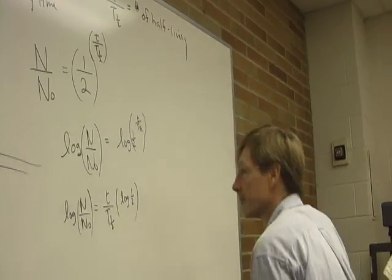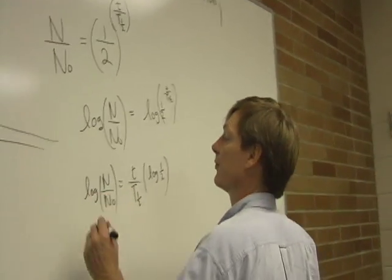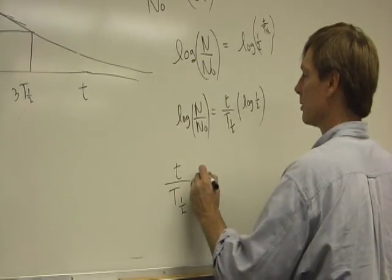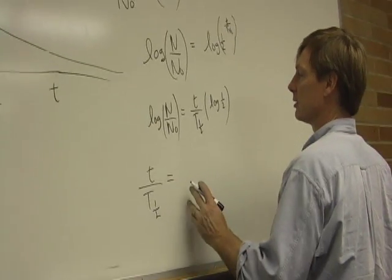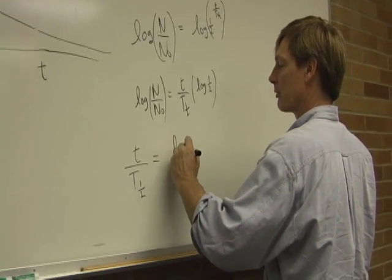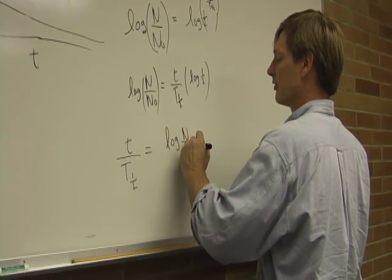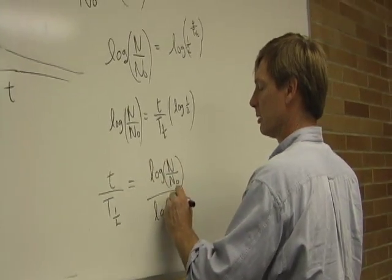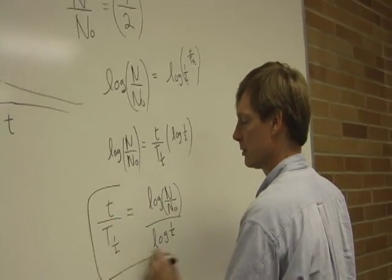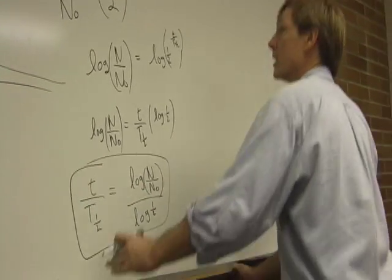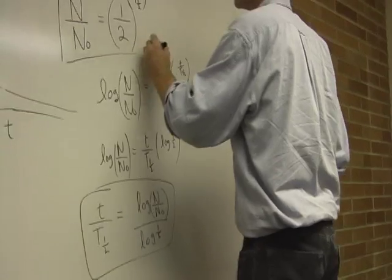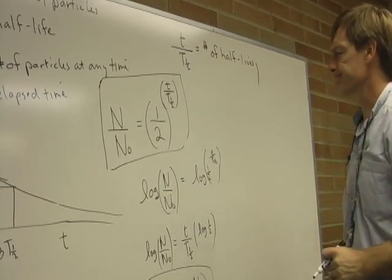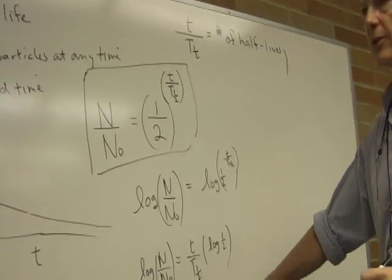And for that, I can break it down further just to solve for the time. That t over the half-life would be equal to the logarithm of n over n sub 0 divided by the log of 1 half. I'm circling both these equations, even though they're the same, because this one's got the log in it. So I'm going to do an example of this.